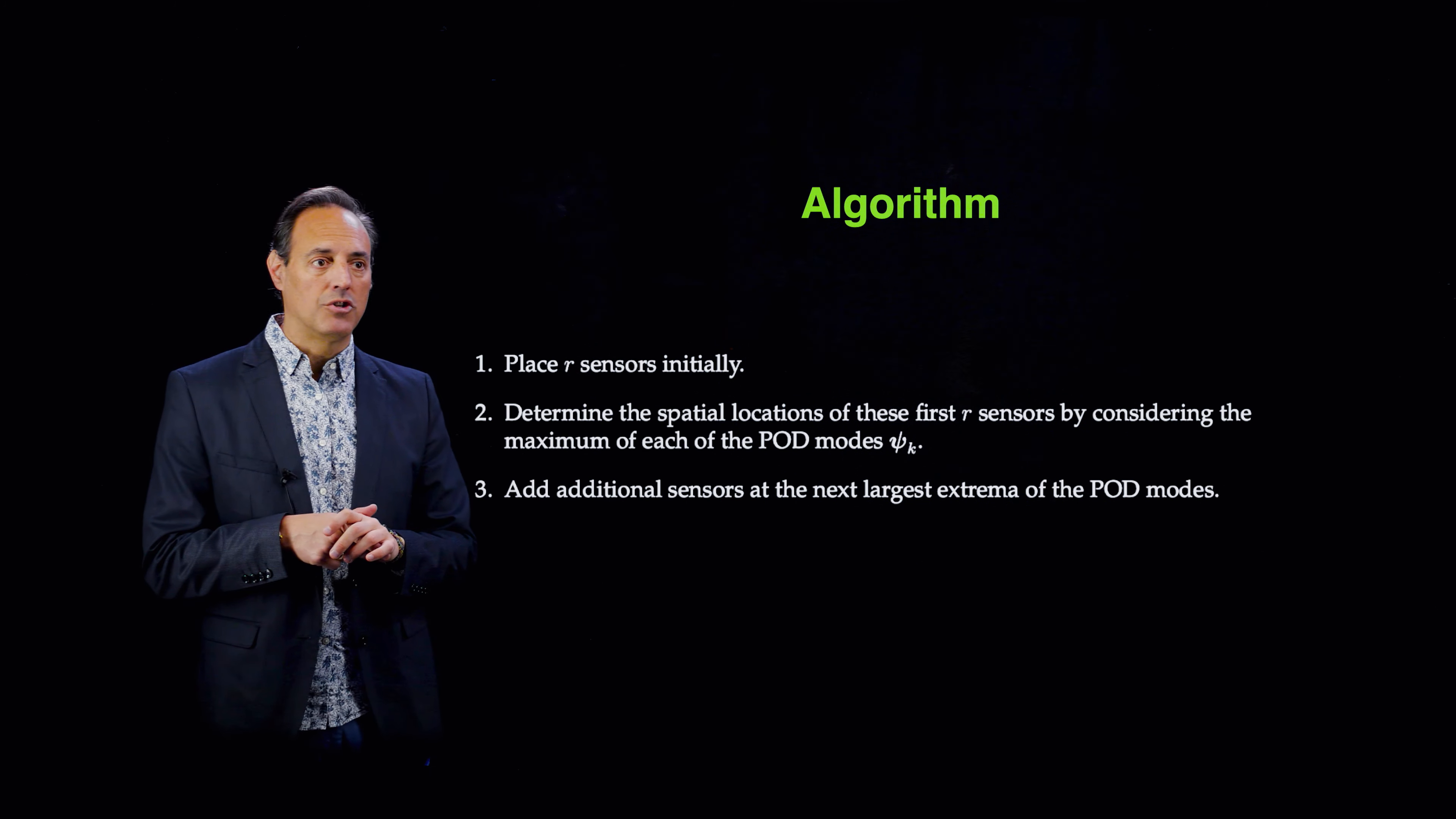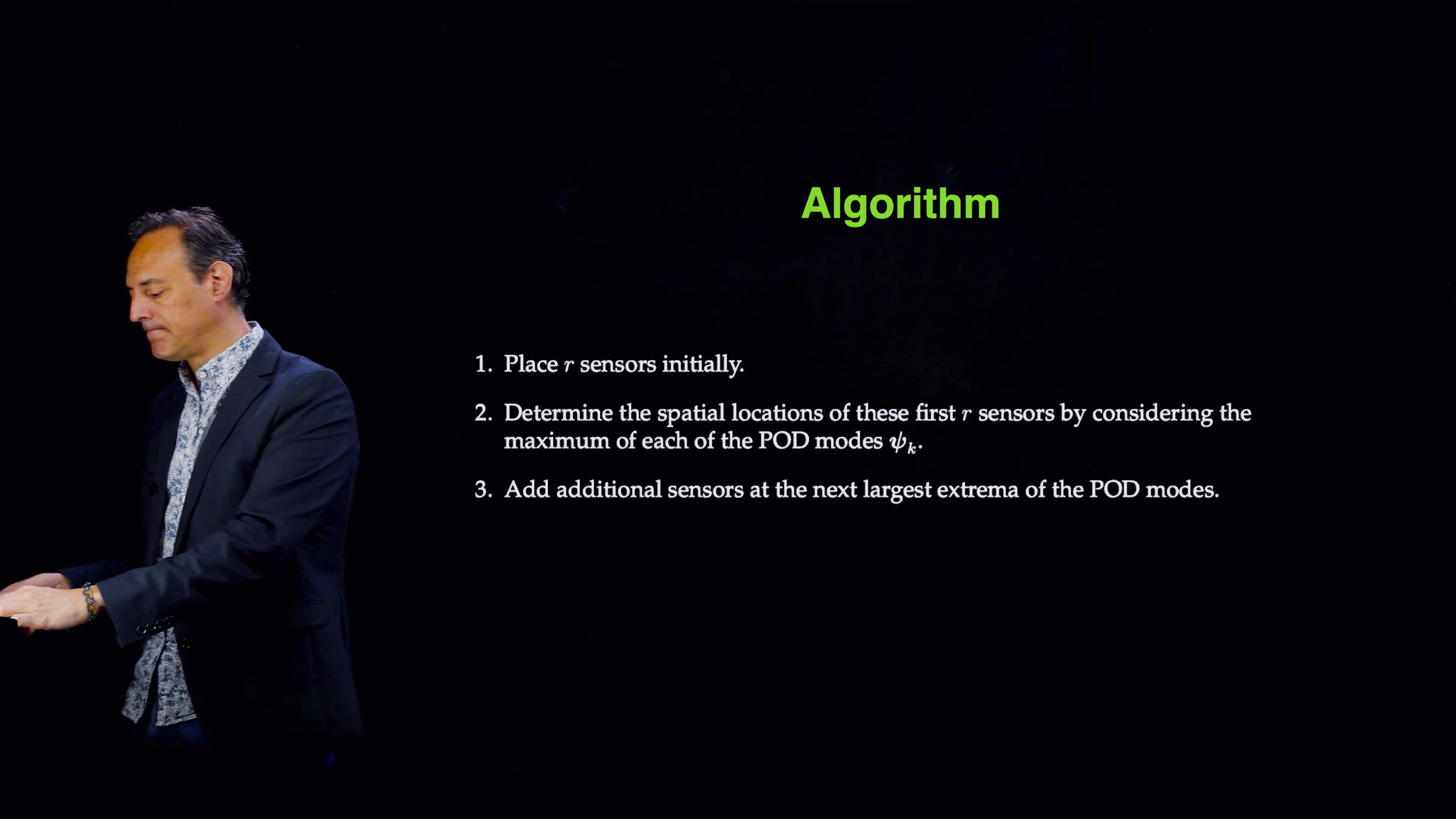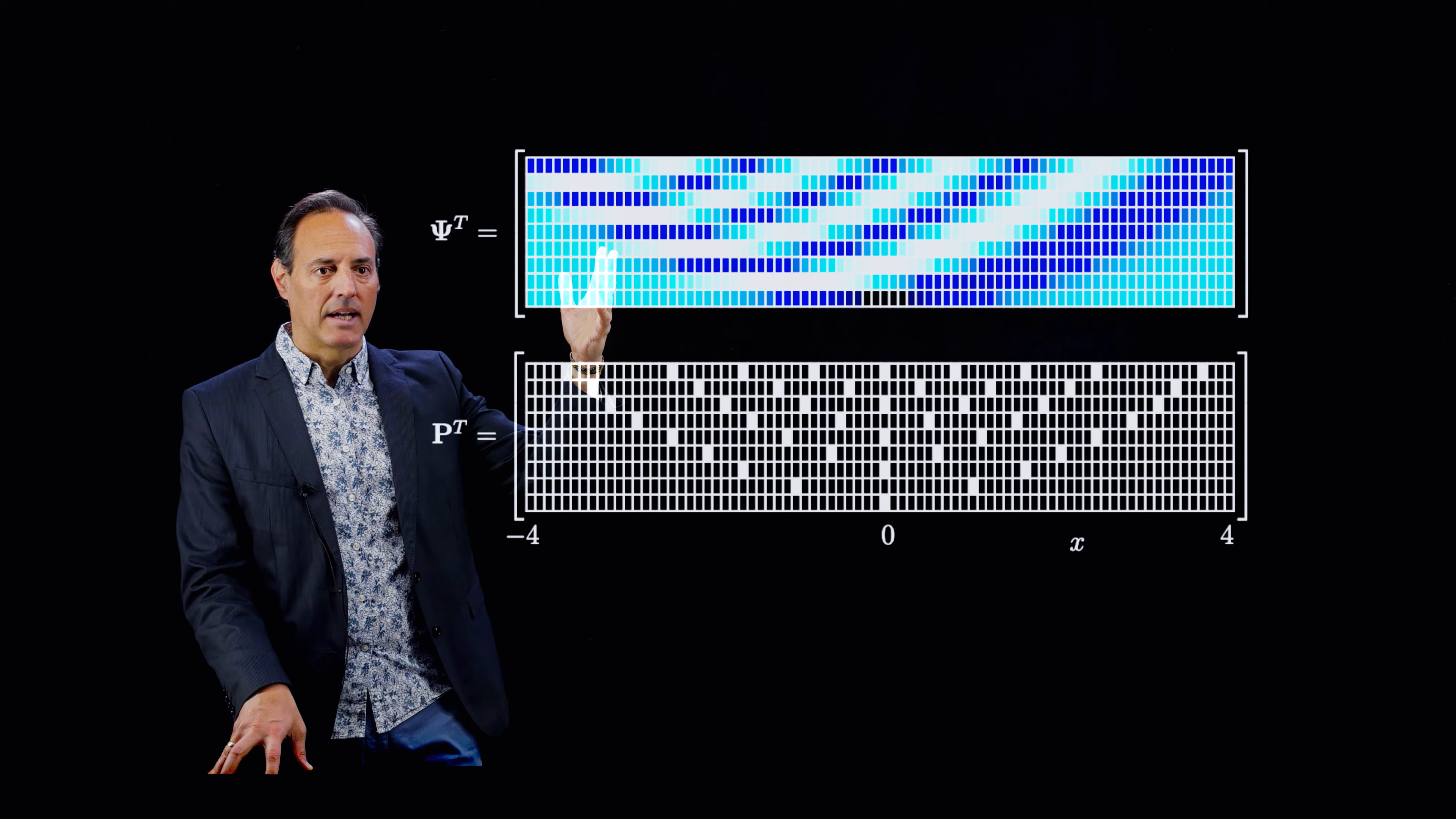That's the whole construct here: discover where max and minimum happen on your SVD modes, place your sensors there because obviously if you have max and minimum on your SVD modes, that's telling you something because the SVD modes are constructed by maximal correlation. So that's telling you there's a lot of correlation there, a lot of stuff happening there, put a sensor there. You place R sensors initially and randomly select them from the maximum of these POD modes you're using.